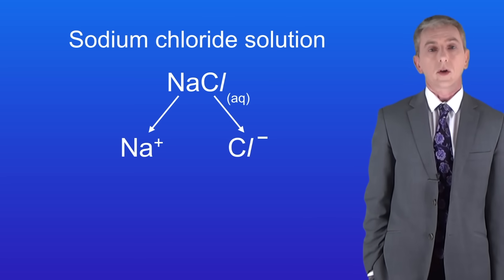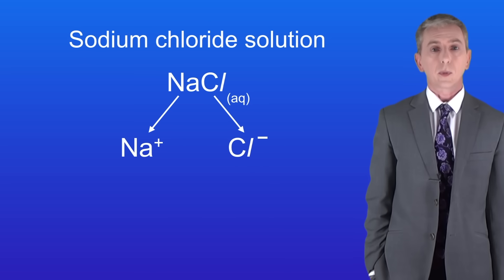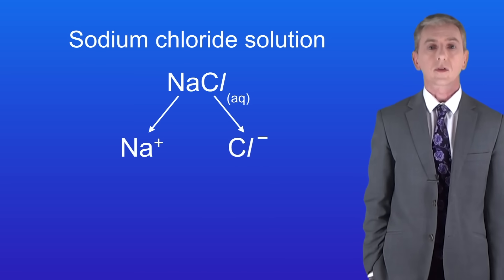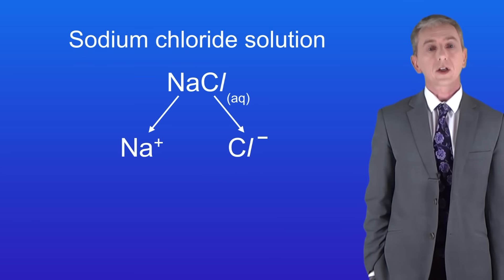Sodium chloride has got two ions: the sodium ion Na+ and the chloride ion Cl-. We've also got to take into account the ions from the water and here they are.